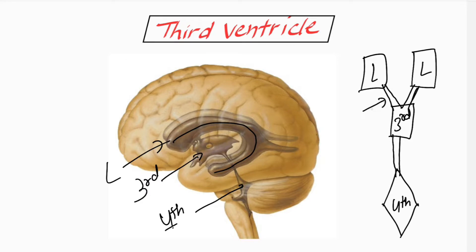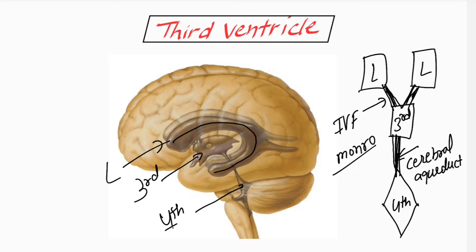The lateral ventricle is connected with the third ventricle through the interventricular foramen, also known as the foramen of Monro. Below, the third ventricle is connected with the fourth ventricle through the cerebral aqueduct, also known as the duct of Sylvius. This communication is required because CSF flows through these foramina — from the lateral ventricle to the third ventricle, then to the fourth ventricle.